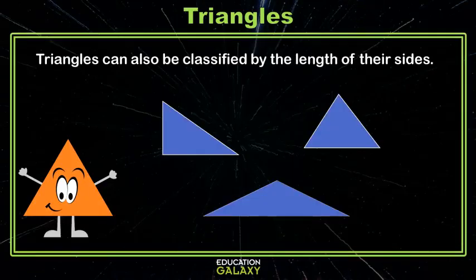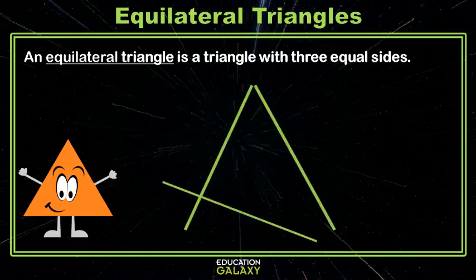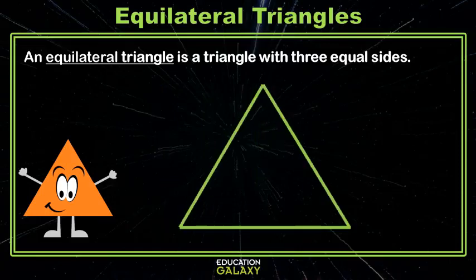Triangles can also be classified by the length of their sides. An equilateral triangle is a triangle with three equal sides. So let's say we take line segments that are three exact same size like you see here, and then turn them into a triangle. That's an equilateral triangle.